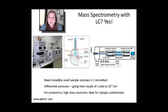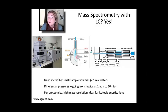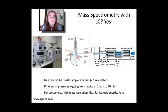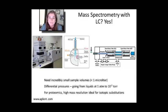That's it for detectors. I gave you three examples: UV-Vis, refractive index, and mass spec. We'll talk a little bit more about fluorescence as well next week. But as you can see, you can put a lot of different detectors on — at the end of the day, UV-Vis is going to be probably 80% of the more common examples that you see. Thanks so much. See you next time.